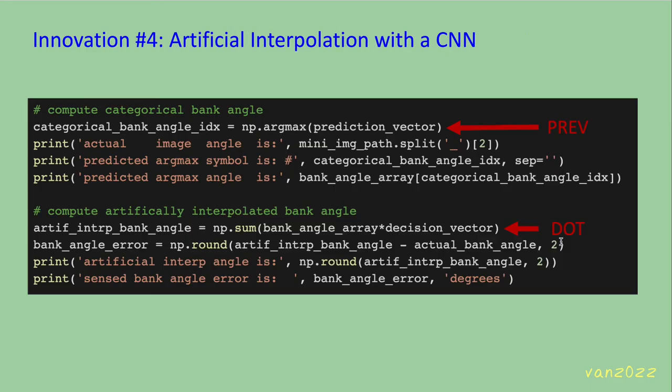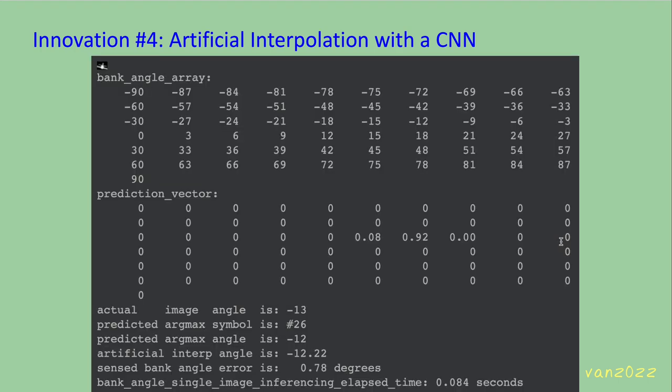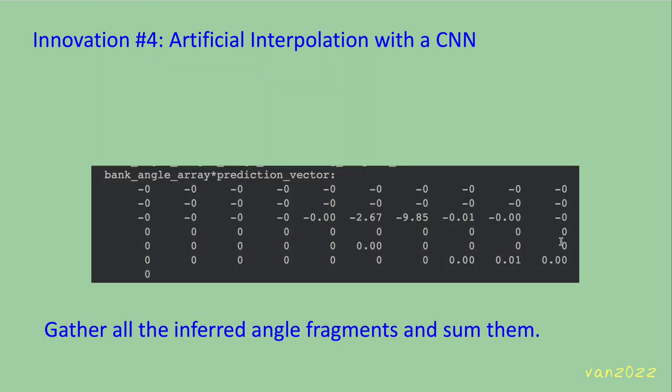Here's how it works. Instead of doing the argmax on the prediction vector and choosing the most likely thing that happened, we do a dot product between the bank angle array and the decision vector. You can see in the prediction vector there are three hotspots, and those three hotspots are going to contribute to our bank angle. We gather all the inferred angle fragments and then sum them up.